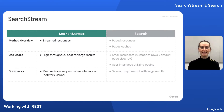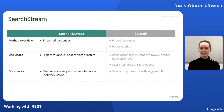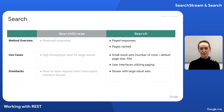With that out of the way, let's look at the differences between searchstream and search. As you might have guessed from the name, searchstream produces streamed responses. Because of this, it has high throughput, which is ideal for larger result sets. The drawback is that if the network is unreliable or otherwise interrupted, the request must be reissued. Search, on the other hand, produces paged responses and caches the entire data set so that subsequent requests will be faster than the first, assuming the search query is the same.